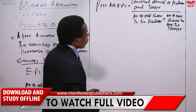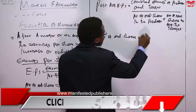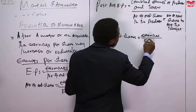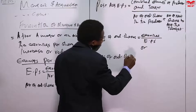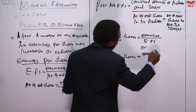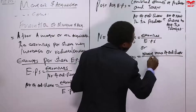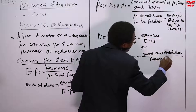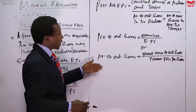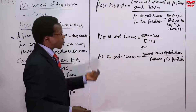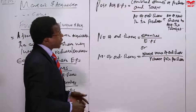The number of ordinary shares can be found two ways: either take total earnings divided by earnings per share, or take the market value of ordinary shares divided by the market price per share. Both approaches give you the number of ordinary shares. The market price per share is also referred to as MPS.